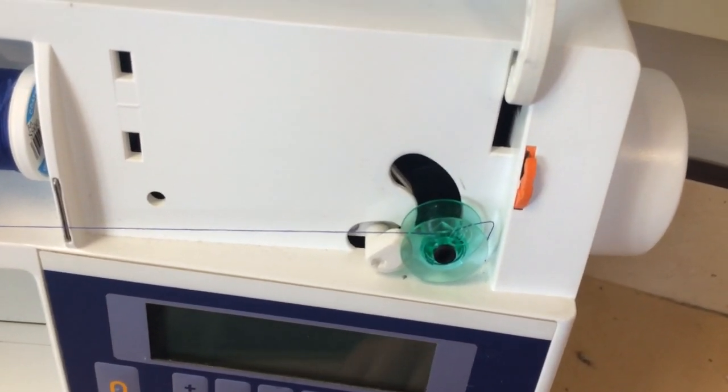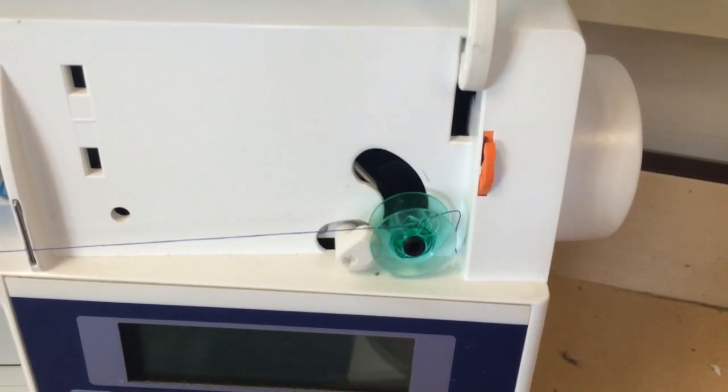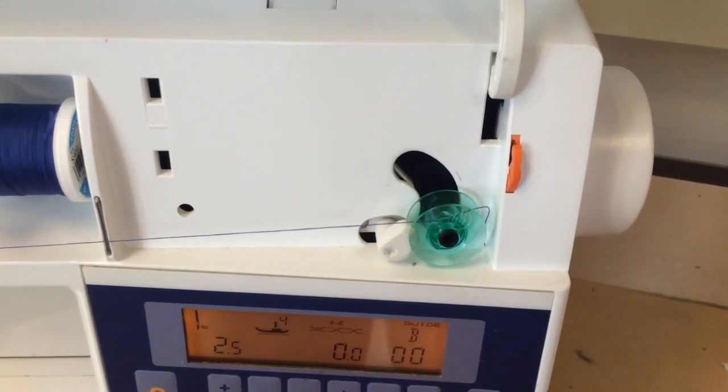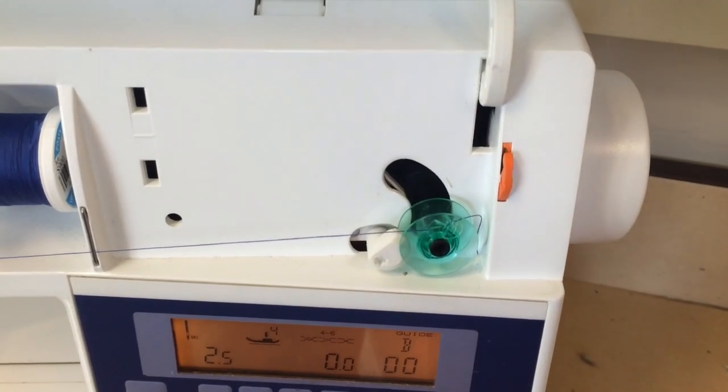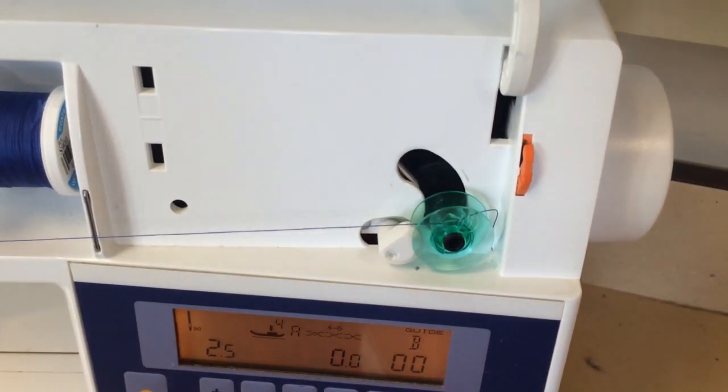This tells your sewing machine that you want to wind the bobbin and not sew with your fabric and thread. Now turn on your sewing machine and use your foot pedal to wind your bobbin. It works best if you go fast, so push your foot pedal all the way down.